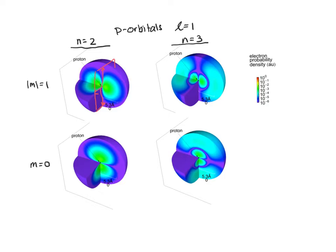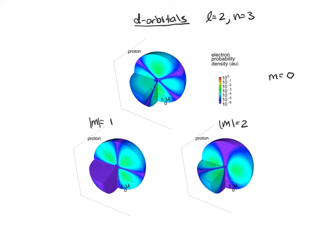That's for m equals one. If I look at m equals zero, remember that m equals zero is a pure eigenstate — not a superposition state — and so this is what we think of as our p_z orbital. It's basically exactly the same, but now the orientation is flipped from being in the xy plane to being along the z axis, and I see this same shell distribution in the n equals three case.